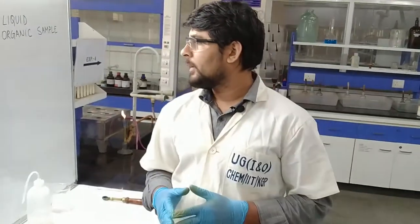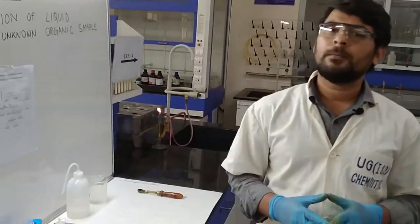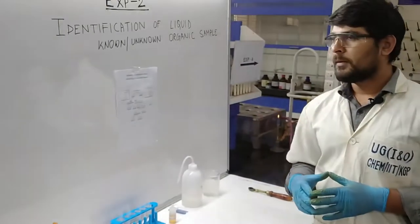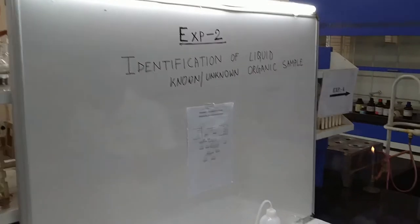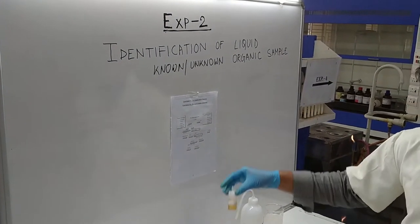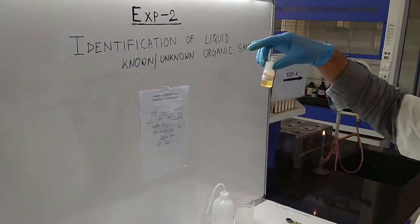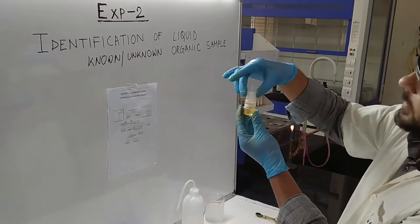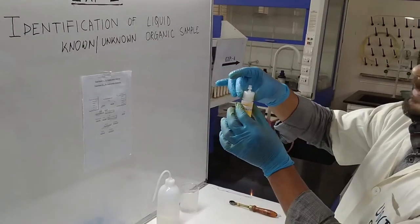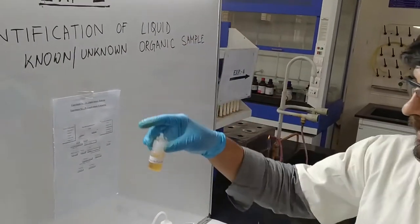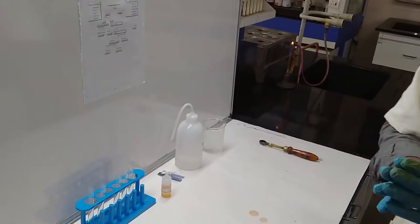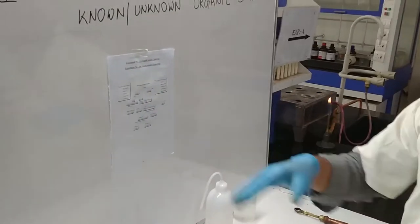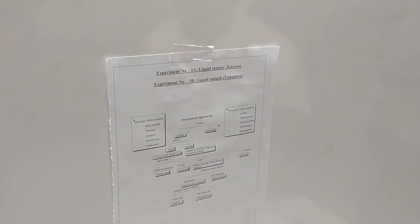Hello students, today I am going to perform experiment number 2 with another sample, that is dimethyl aniline. I already took some sample inside the sample container and now I am going to use this one for the experiment. According to the flowchart, for the solid sample, first of all we have to perform the preliminary test and then after that we have to perform the confirmatory test.